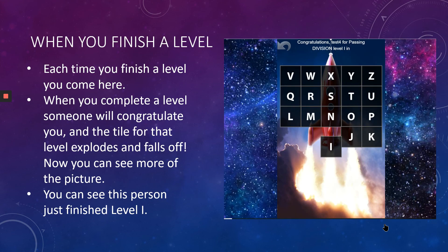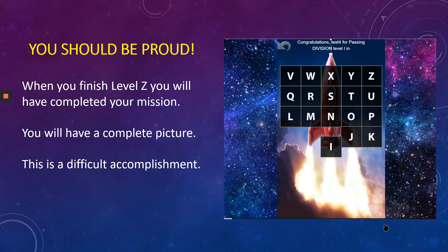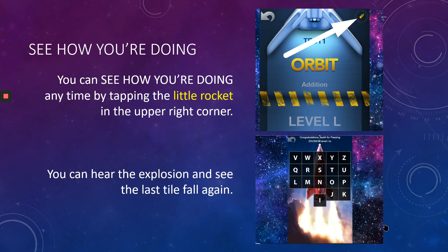When you finish a level, you come to this screen. Someone will congratulate you, and the tile for that level will explode and fall off — now you can see a little more of the picture. This person just finished level I — you should be proud. When you finish level Z, you will have completed your mission, you'll have a complete picture, and all the tiles will be gone. This is a difficult accomplishment, and that's why you should be proud.